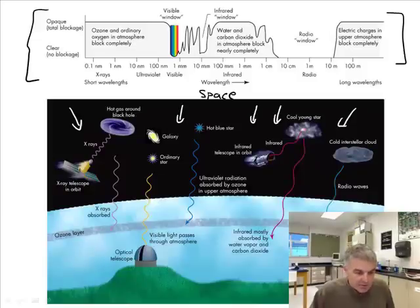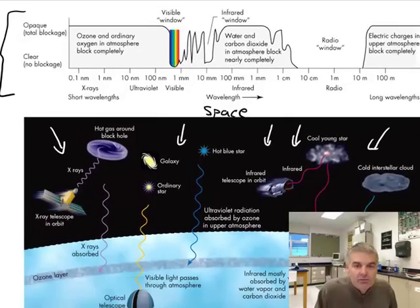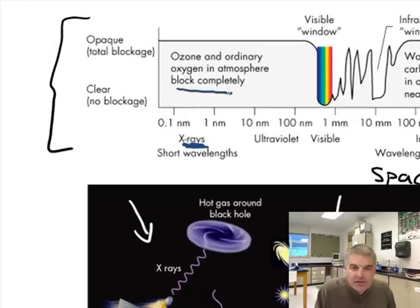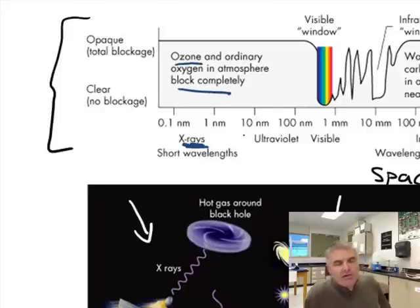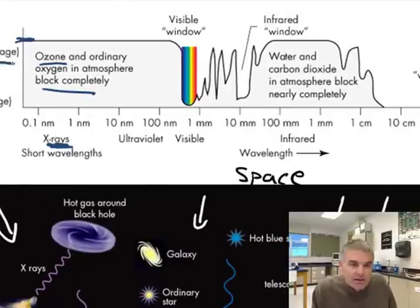So the picture at the top, we love graphs, us science geeks. What we can say is x-rays, though they're up in space, are blocked by the ozone completely. I'll have a page that you may want to, instead of trying to copy this down, just print this and tape it into your notes. So this is blocked, total blockage here.